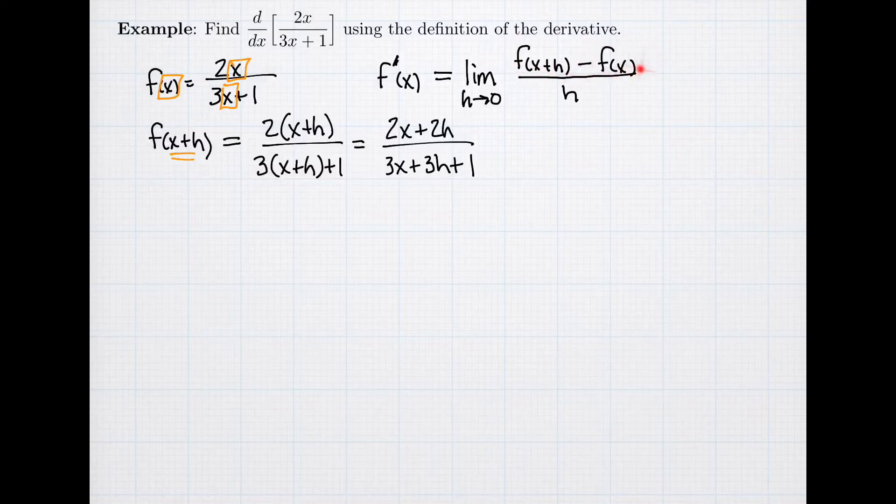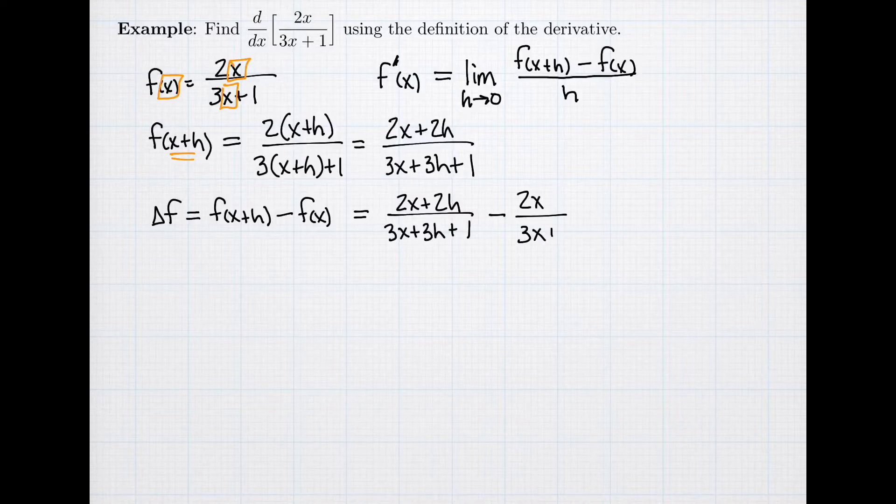In my difference quotient, I now need to calculate f of x plus h minus f of x. So let's calculate the change in my function, my delta f, which is what I get when I take the formula I just found for f of x plus h, and I subtract f of x. For this rational function, my f of x plus h became 2x plus 2h over the quantity 3x plus 3h plus 1. And my original function f of x is 2x divided by 3x plus 1. When I'm doing a difference quotient involving a rational function, I have these quotients, I have fractions. And so I need to simplify, and the way that I do that is I need a common denominator.